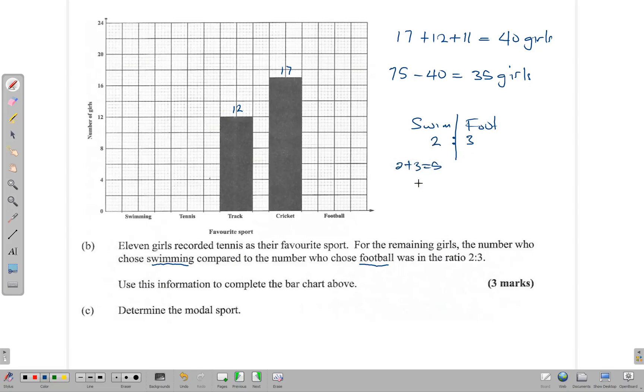So swimming will be 2/5 times 35, which gives us 14. And football, by that same measure, will be 3/5 times 35, which gives us 21.